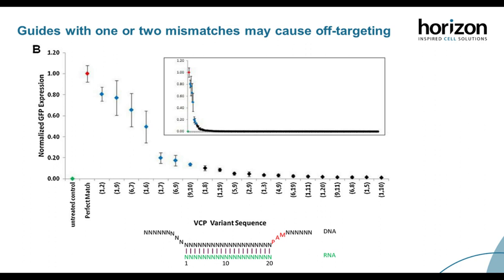For the VCP 2-base mismatch walk using our GFP assay, data was sorted from highest to lowest functionality. With two mismatches, less than 5% of combinations tested retained functionality, and the combinations that did usually included one mismatch at position 1—the 5'-most base. We had to zoom in on the graph to see the few sequences that tolerated two mismatches, which was only 7 of the 190 sequences tested. Overall, these data tell us we need to avoid guide RNAs with one or two mismatches to other regions of the genome to reduce off-targeting.